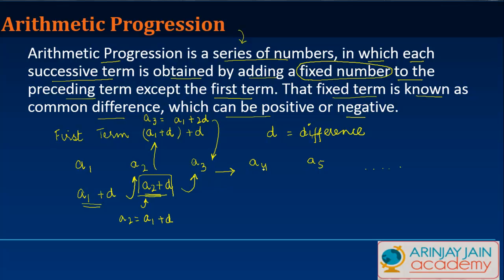Every successive term of the arithmetic progression can be found by adding this common difference to the preceding term. So a4 can be written as a3 plus d, a5 can be written as a4 plus d, and so on. The nth term or an will be equal to an-1 plus d. Whatever is the number over here, we have n-1 here, we had 5 here, 5-1 is 4.